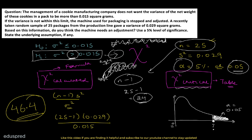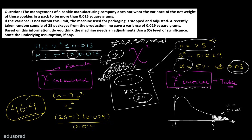The critical value is the point to the right of which we have 5% of the area. To find this from the chi-square table, we need the degrees of freedom (24) and the level of significance (5%). At the 5% level with 24 degrees of freedom, the chi-square table gives a critical value of approximately 36.42. I won't re-teach how to read the chi-square table here, as that's covered in another video.